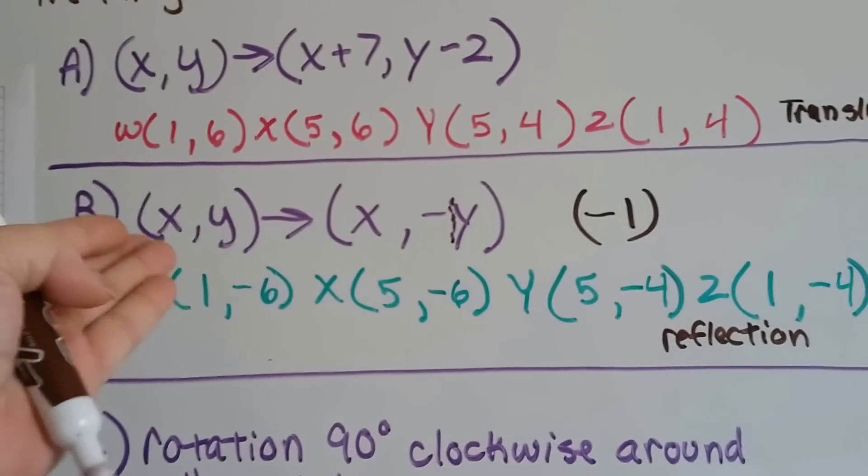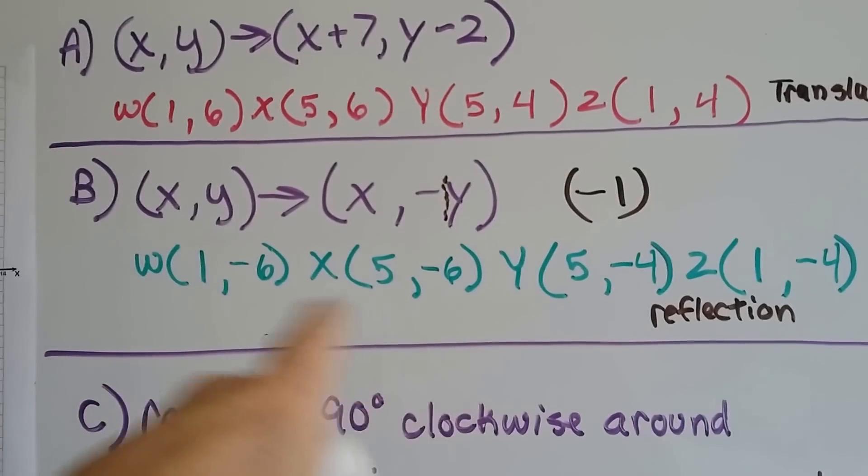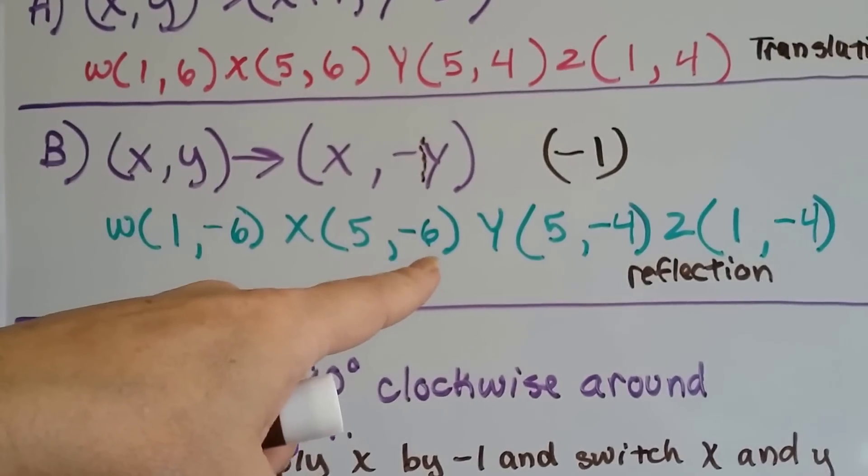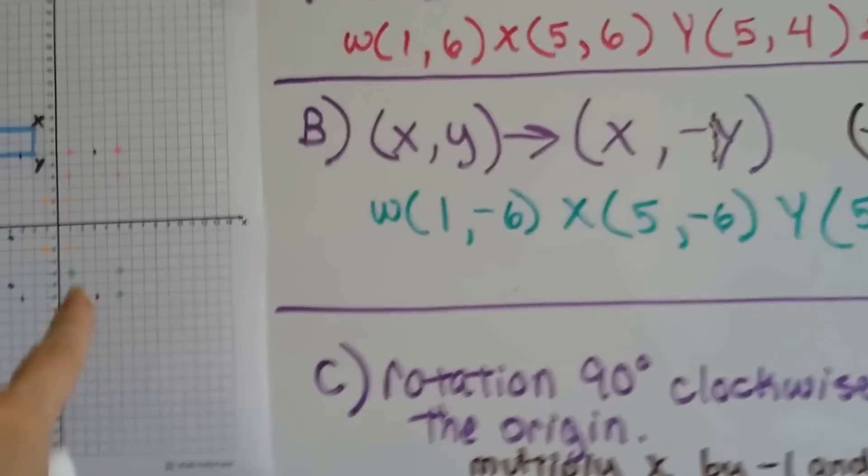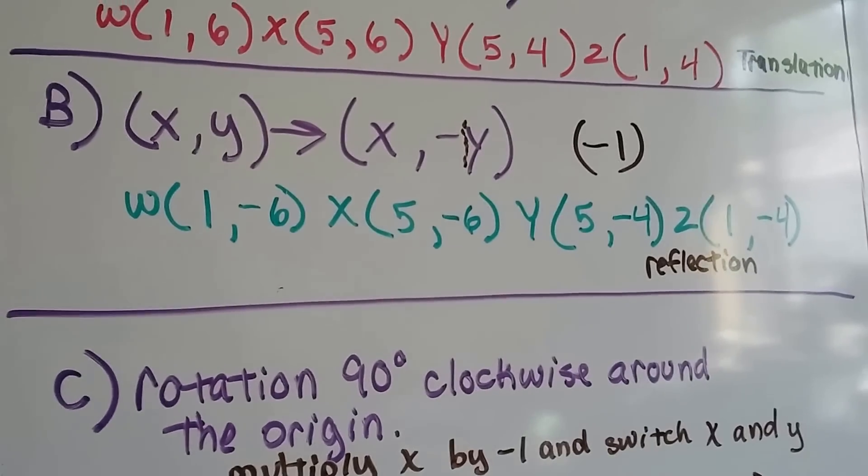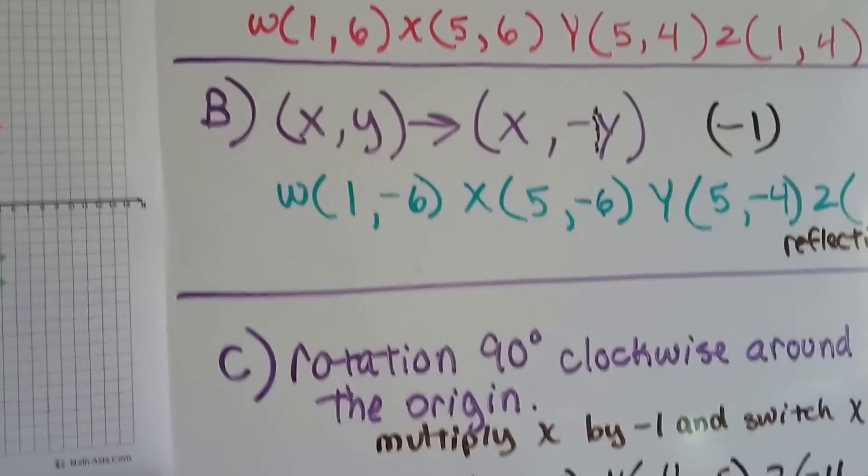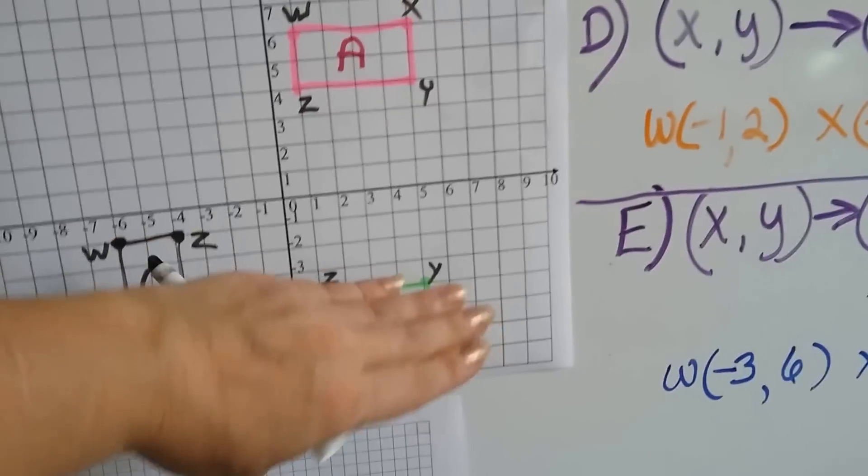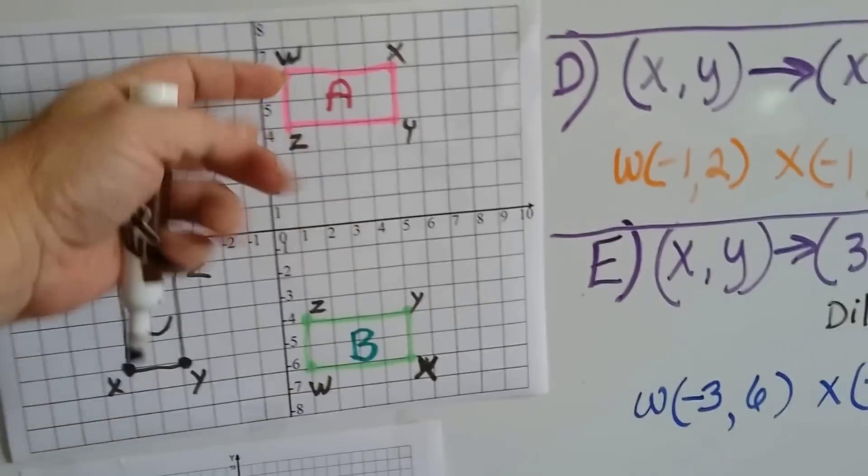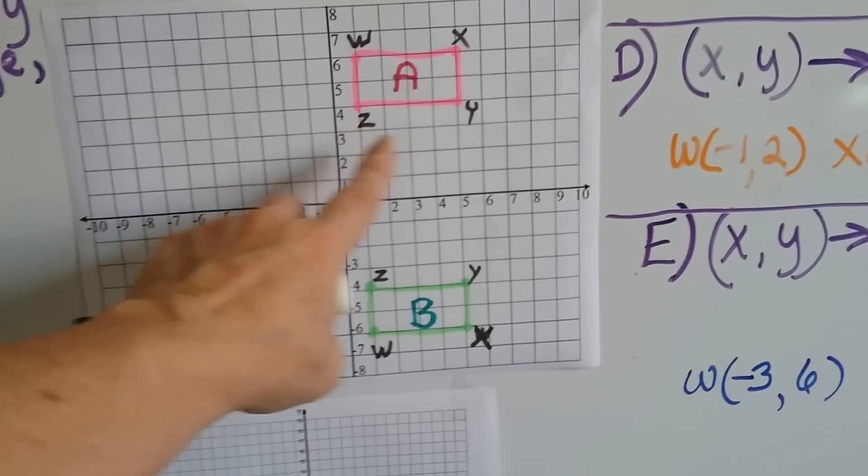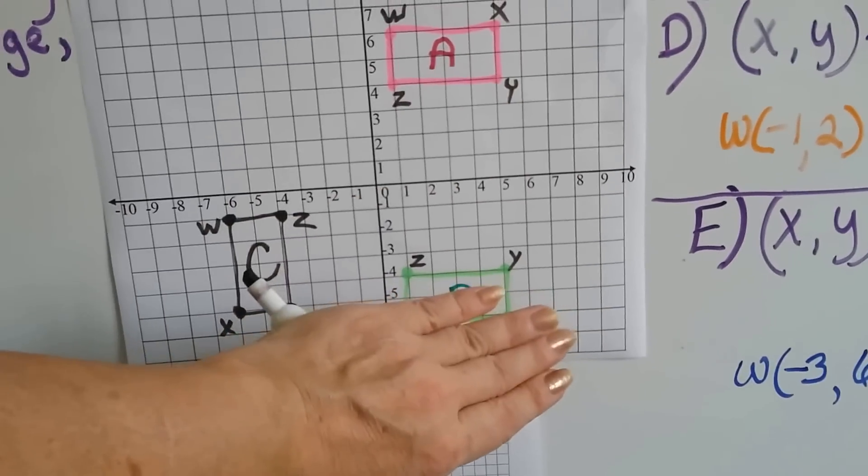We're going to take the pink y values and multiply them by negative 1. So 6 times negative 1 is negative 6. 6 times negative 1 is negative 6. 4 is negative 4. 4 is negative 4. Now we've got our new green rectangle, but it is a reflection of the pink one. So how are we going to label it? The pink one had w, x, y, z, and because this is a reflection, it flipped over. It went like this. So whatever was on the top, w and x, is now on the bottom, w and x. Whatever was on the bottom, z, y, is now on the top, z, y, because it flipped. So now that is the green image for B, the reflection.